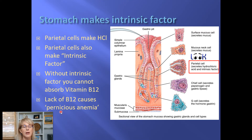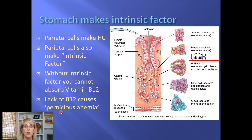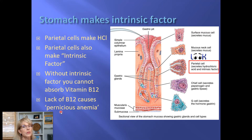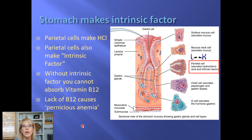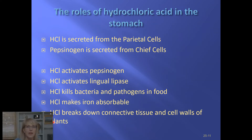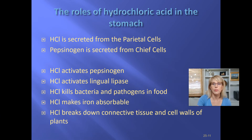A deficiency in intrinsic factor from parietal cells is generally seen in the elderly. Whenever elderly people become anemic, it's important to make sure their diet has enough iron and protein, but very often older people will simply be given injections of vitamin B12 on the assumption that their parietal cells are not making enough intrinsic factor. Taking an oral vitamin won't work if you don't have enough intrinsic factor — the B12 needs to be injected.